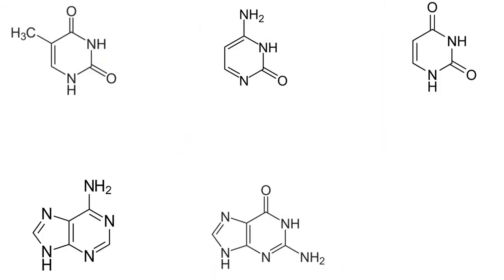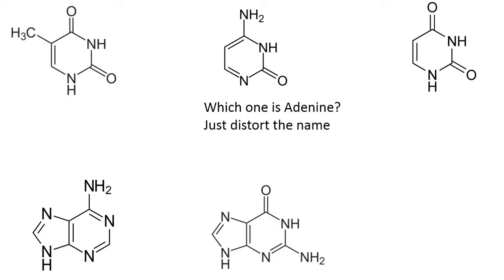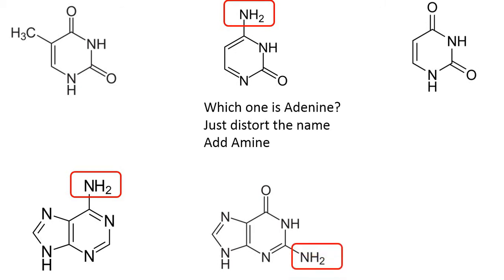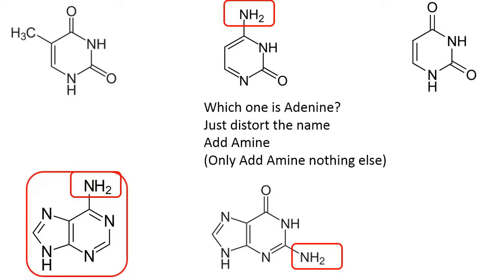So if in an exam you are given these five structures and asked which one is adenine, just distort the name of adenine to 'adamine'. So what does adamine mean? Adamine means the structure of adenine must have an amine group added to it. If we see among these five structures, we can see that this structure has an amine group added to it. So if we follow the rule that you only add amine and nothing else, we are left with only one structure which has been added only with an amine group and nothing else. So this must be adenine.